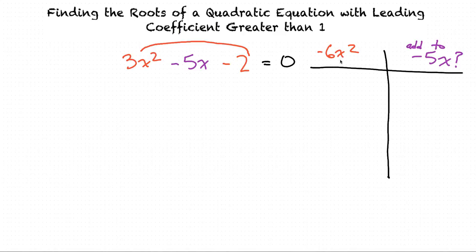Some possible factors are -3x and positive 2x. Those multiply to equal -6x². But do they add to -5x? No, that equals -x.